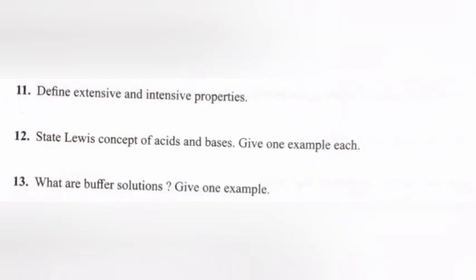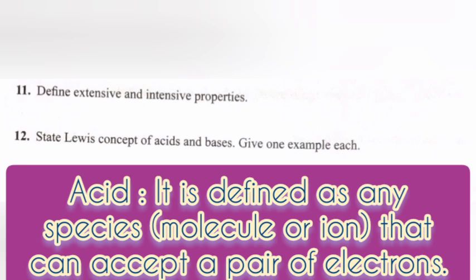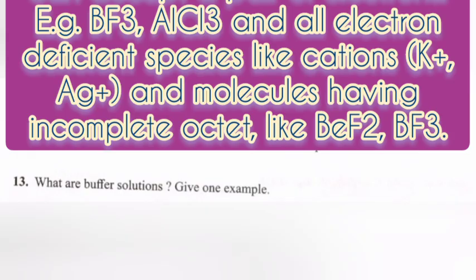Question 12: State the Lewis concept of acid and base and give an example each. Lewis acid is defined as any species, molecule, or ion that can accept a pair of electrons. Examples: BF3, AlCl3, and all electron-deficient species like cations and molecules having incomplete electron shells.